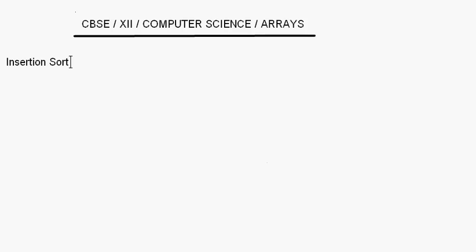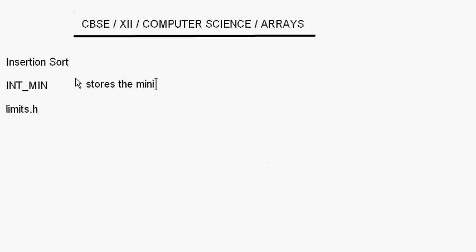Let's take up insertion sort. This is the third technique in sorting, after selection sort and bubble sort. In insertion sort, the basic thing to remember is there is one constant variable called INT_MIN, which comes under the header file limits.h. This stores the minimum possible integer value.